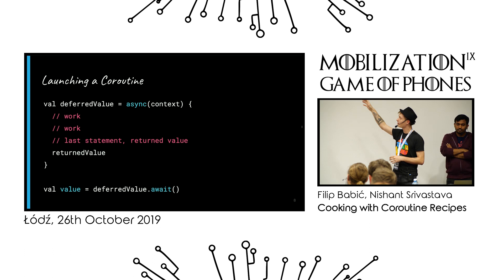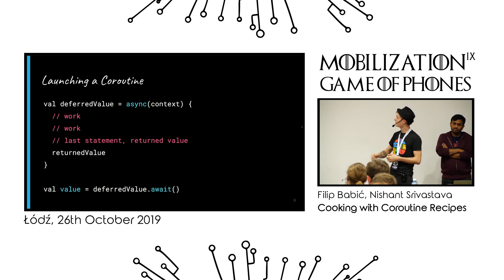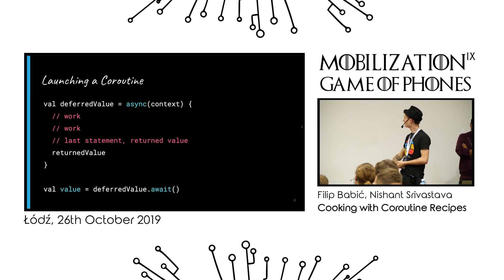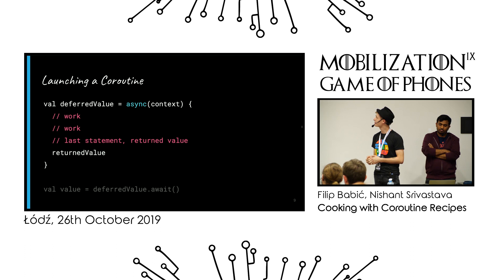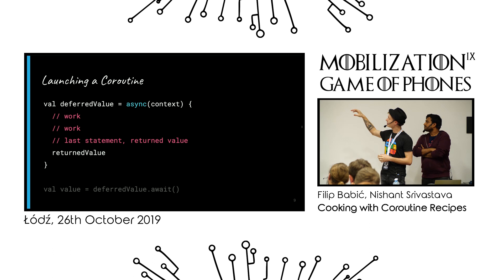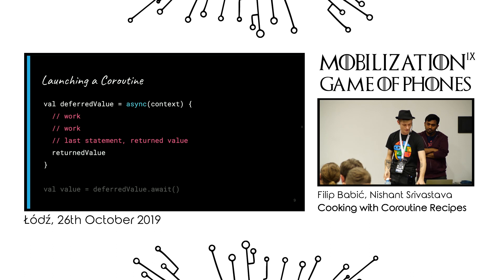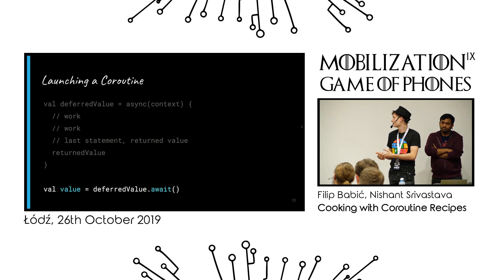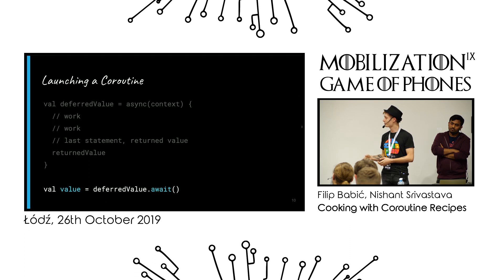You open up the async block and assign it to a deferred value. You can do some work — computing, parsing — in some thread depending on the context. At the very last statement, you define which value will be returned. The block executes immediately, running in parallel with the rest of the code. If computation finishes before you call await, you get the value immediately. If not, the coroutine suspends and waits. Either way, you don't waste resources or block anything.